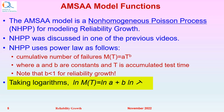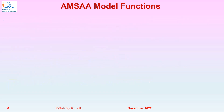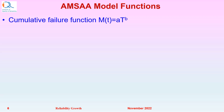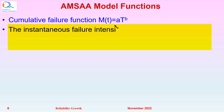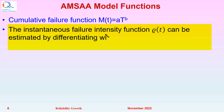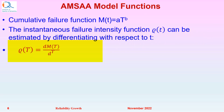Taking logarithms, ln of M(T) equals ln of A plus B times ln T. The cumulative failure function M(T) equals A times T raised to B. The instantaneous failure intensity function rho of T can be estimated by differentiating with respect to T, giving rho(T) equal to dM(T)/dt, which equals A·B·T raised to B minus 1.